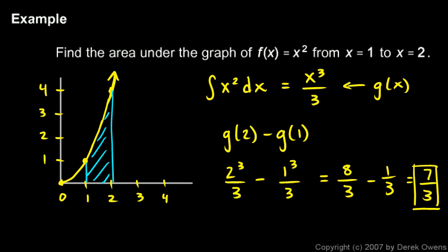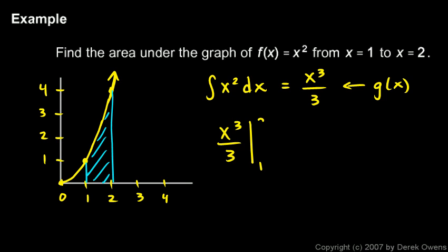And we found it. And I'll show you a notation here that's important to know because it's very, very common. This evaluation of this function from 1 to 2, the area from 1 to 2, it's commonly written like this. I would write x³/3. You put a vertical line, and you write a 1 and a 2.